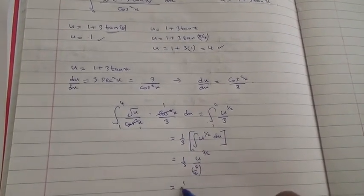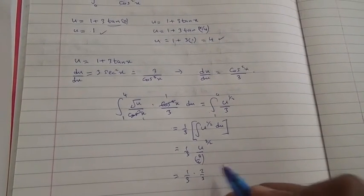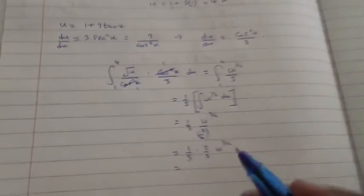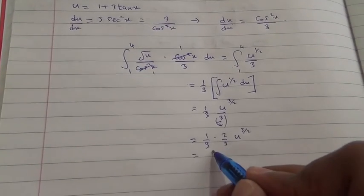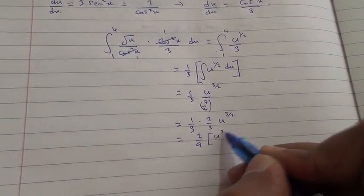If you divide by 3 over 2, you're going to see it's going to become 2 over 3, times u to the power of 3 over 2. And therefore, you end up with 2 over 9, times u to the power of 3 over 2.